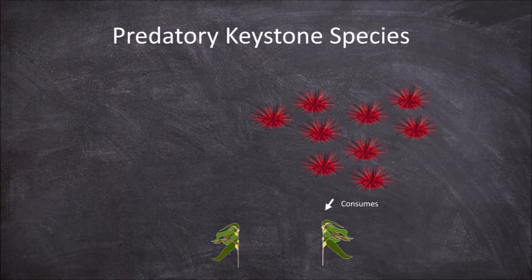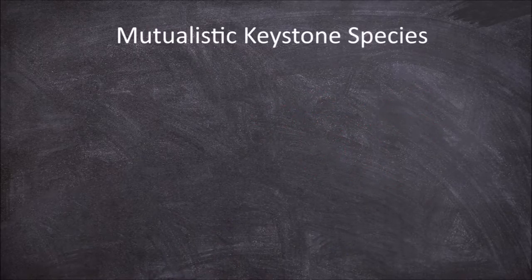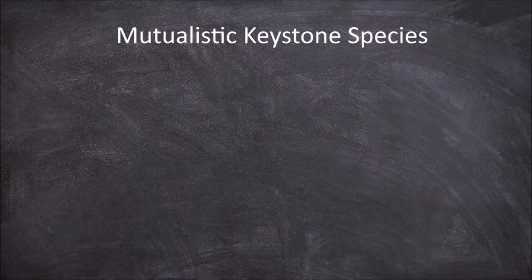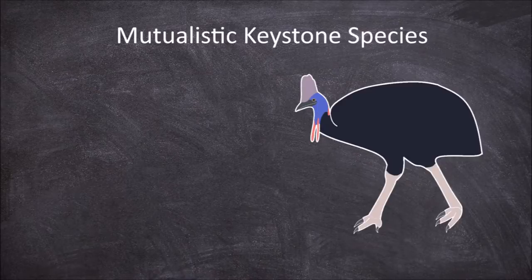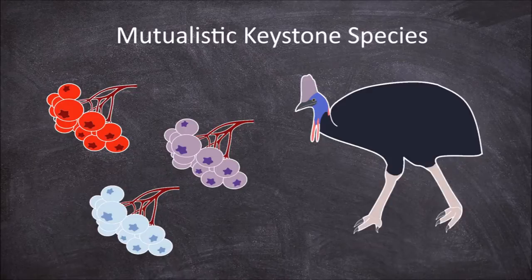Keystone species are also observed in species that have mutualistic relationships. An example of mutualistic keystone species is seen between the frugivorous bird the cassowary and the many plants that are reliant on them for seed germination and dispersal.